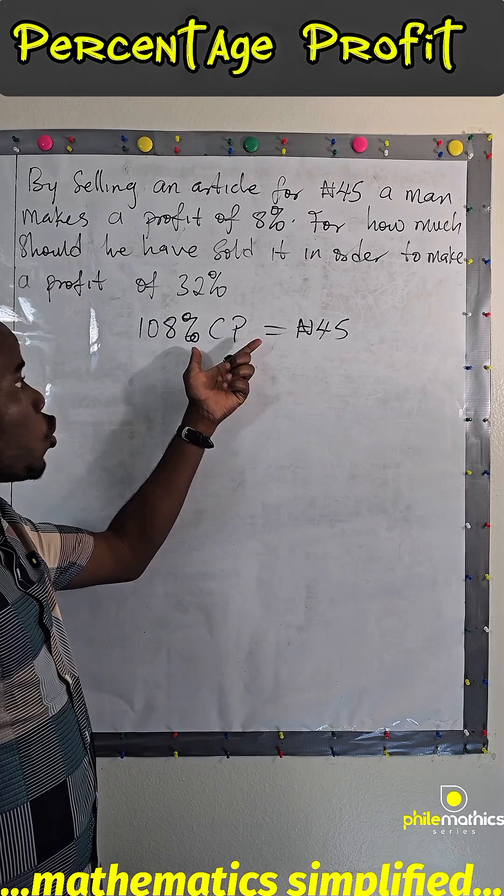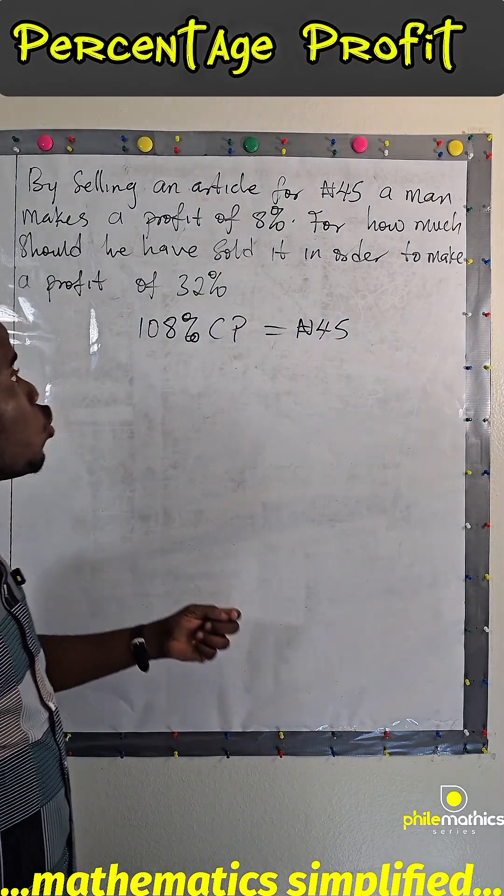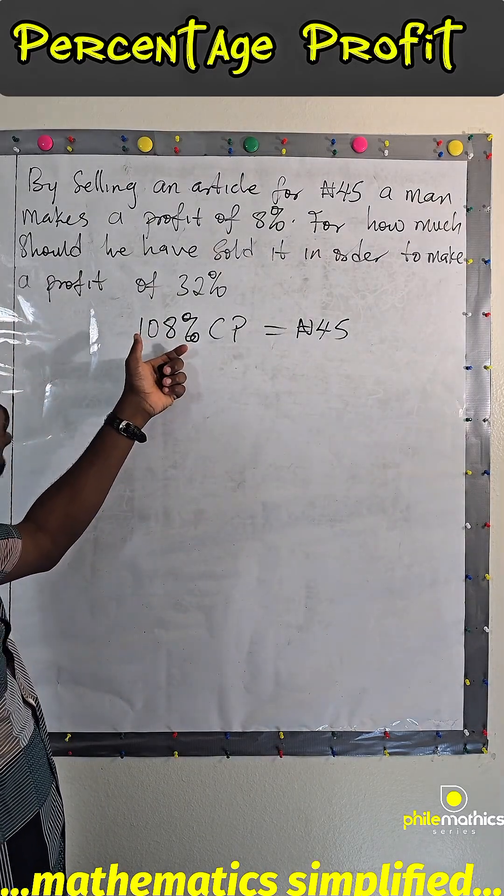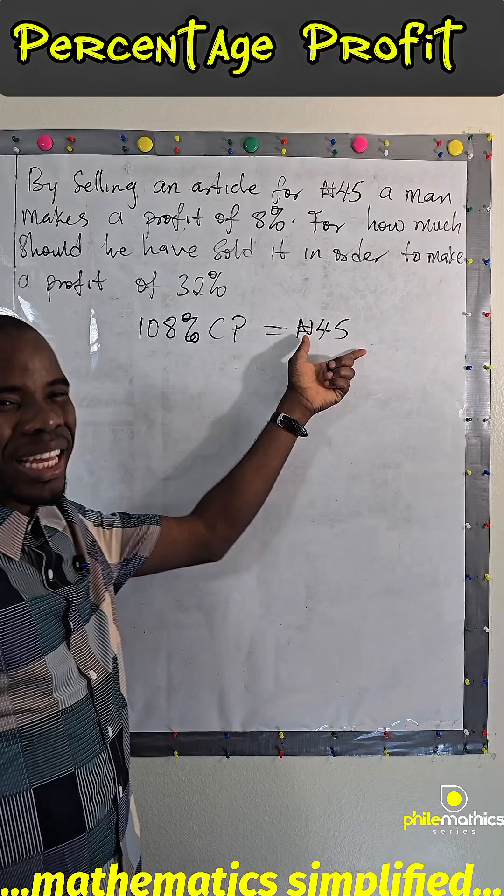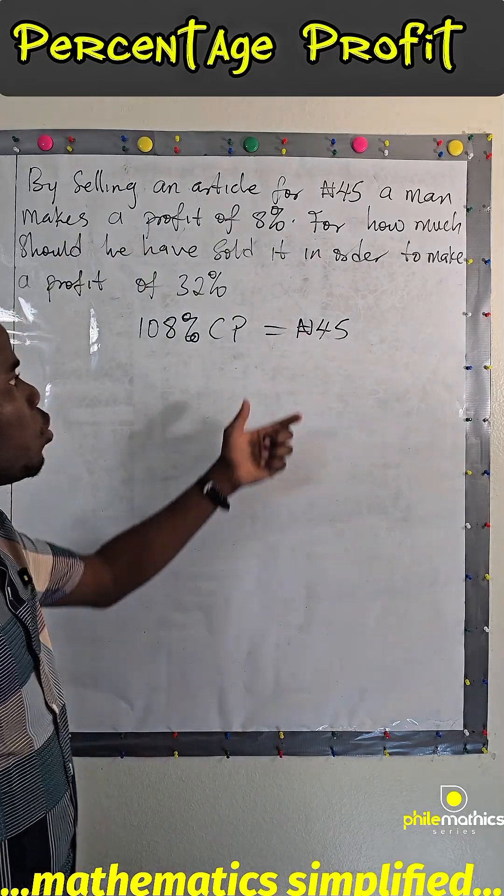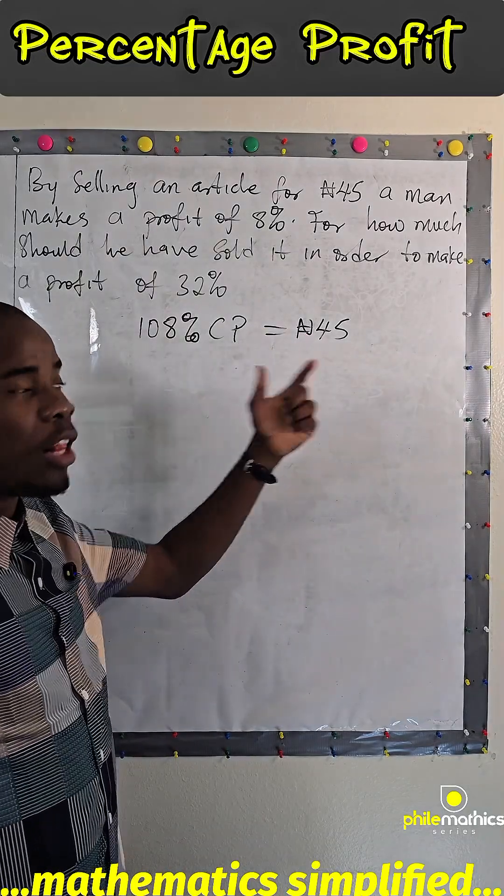We usually assume his cost price to be 100%. So, if you sell it, if you make 108% of the cost price, that's how you get the selling price. This is an easier way to do profit and loss.